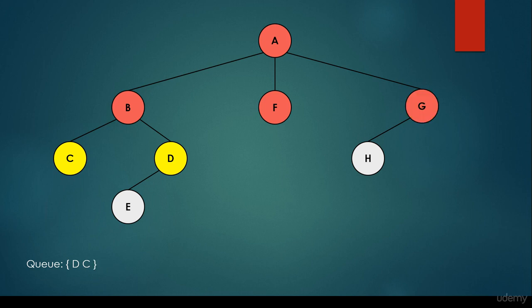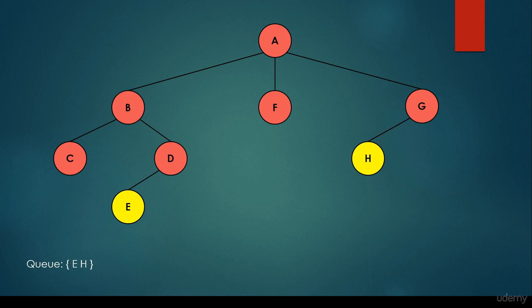We dequeue G — as you can see, the size of the queue keeps changing. G has a single child, H, so we visit H and add it to the queue. We then dequeue C, which is a leaf node, so we are done with it. Next we dequeue D and consider its children — it has a single child E, so we add E to the queue. We then dequeue H.